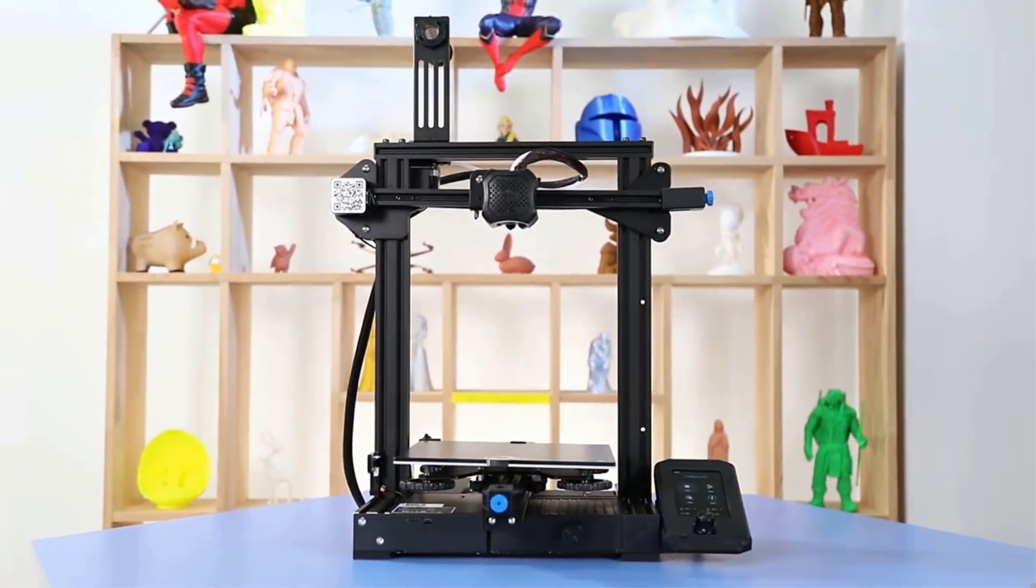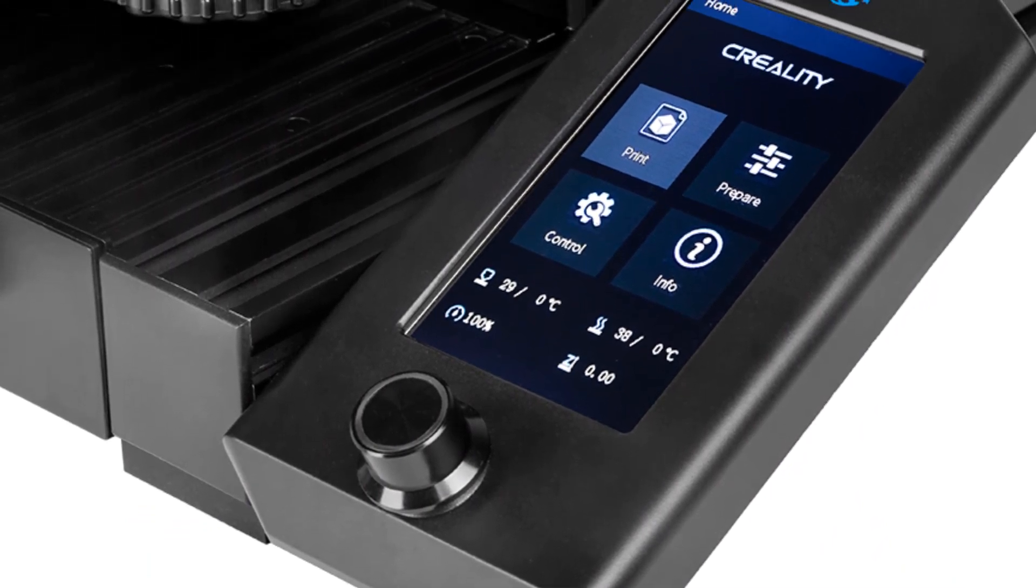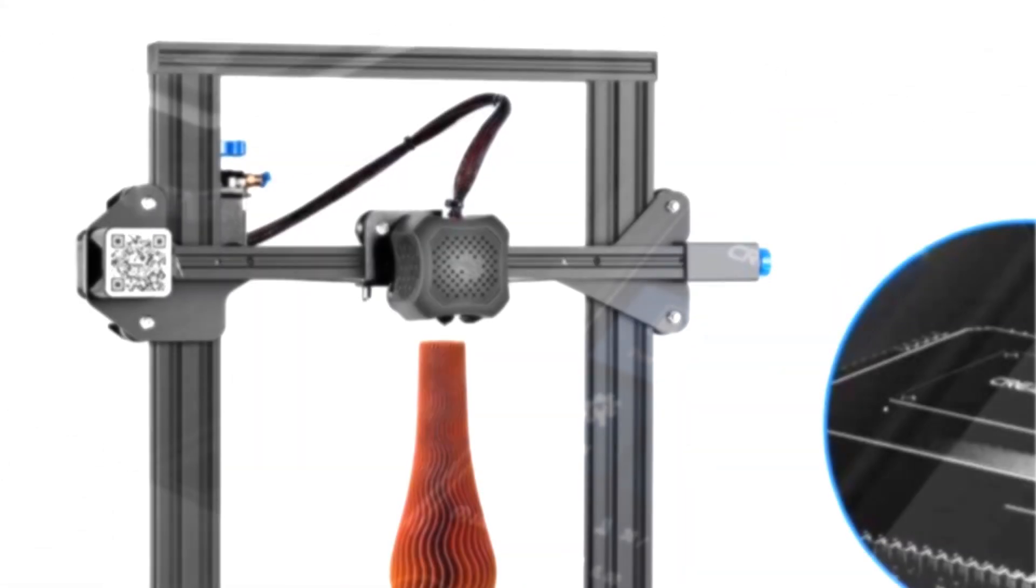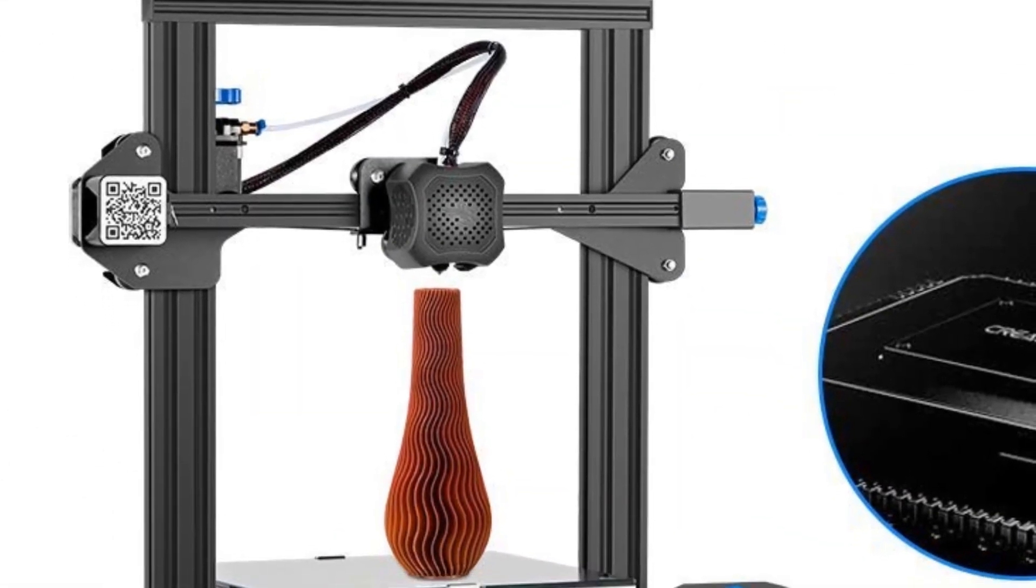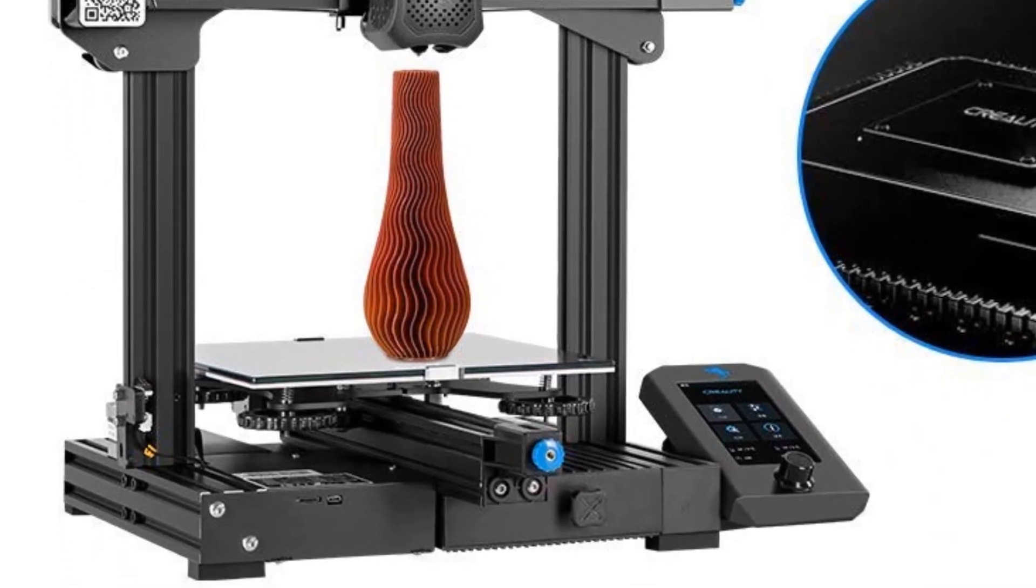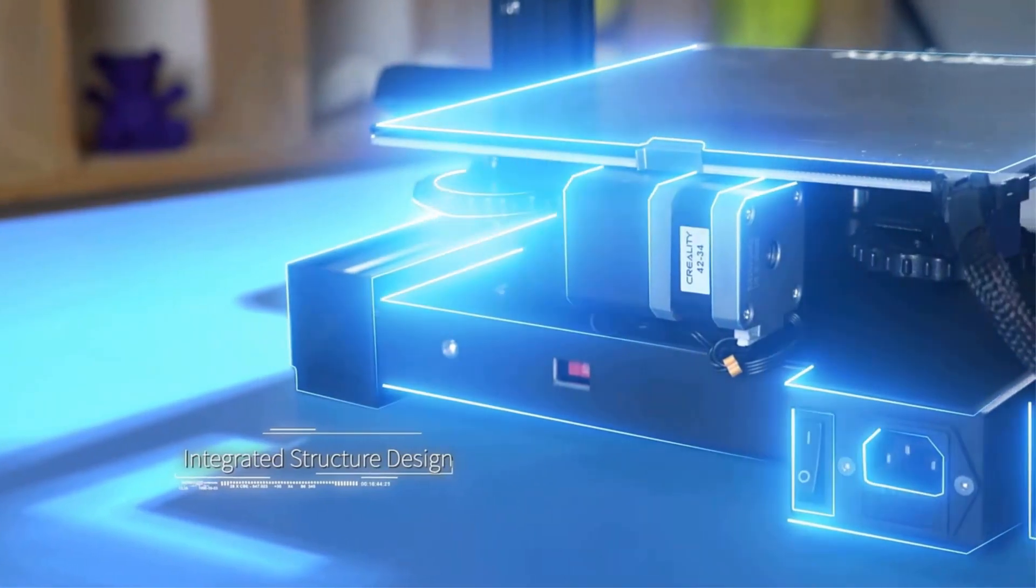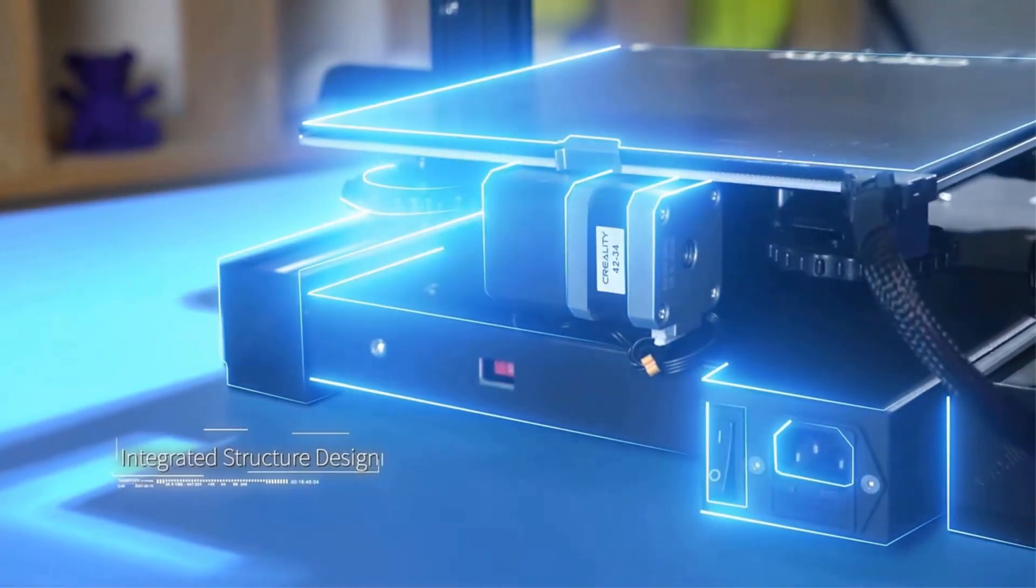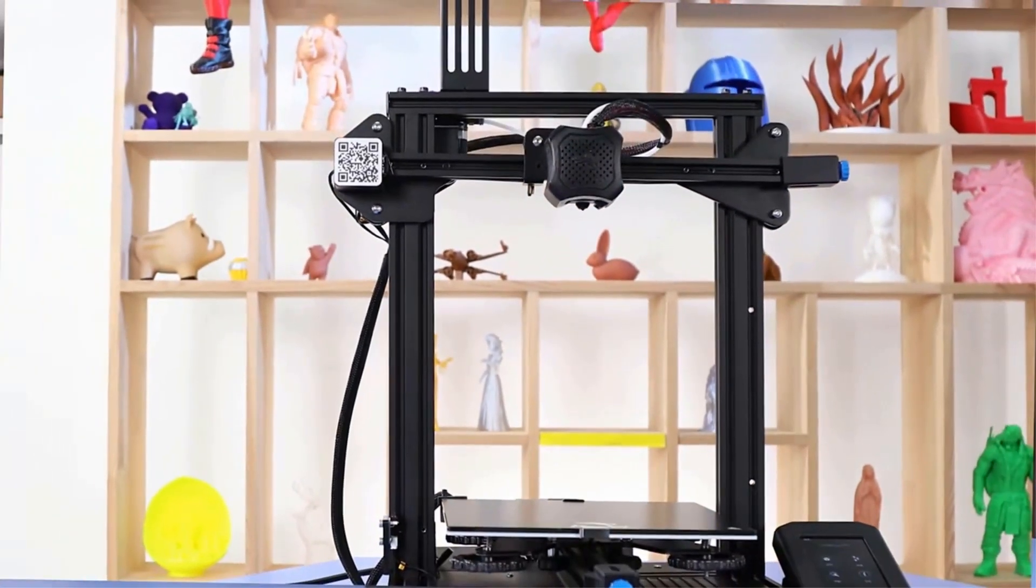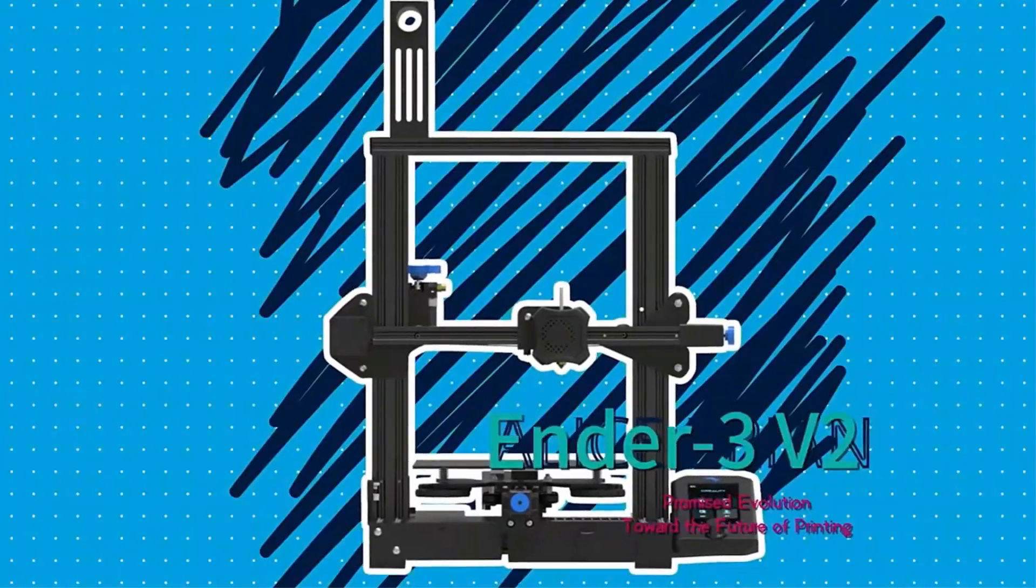Ender 3 Pro comes with UL certified power supply which protects your printer from unexpected power surges. With its semi-assembled kit, it is very easy to assemble and it permits you to learn about the fundamental development of 3D printers as you assemble them. A pleasant STEM educational experience with mechanical engineering and electronics.